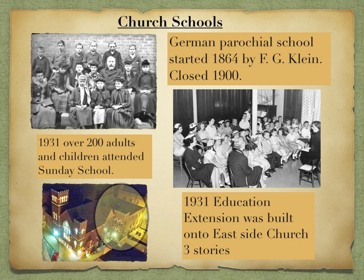English was taught to German immigrants who came to our church. In 1931, the Sunday school classes were meeting all over the church. Attendance for adults and children was near 200. With such limited space, the congregation voted to add an additional building in the rear of the church for school classrooms.